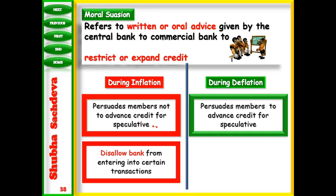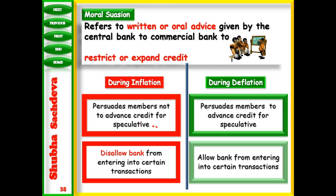During deflation, when money supply is very less in the economy and demand is low, to increase demand and money supply, RBI persuades commercial banks to advance credit for speculative purposes as well. It permits banks to enter into certain transactions which will help them to increase the money supply in the economy.